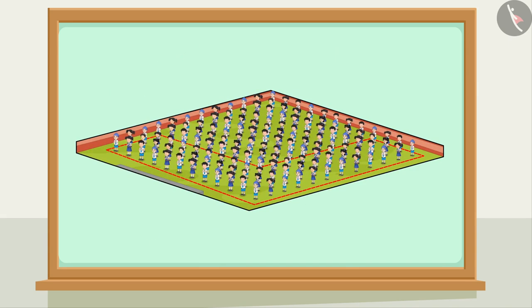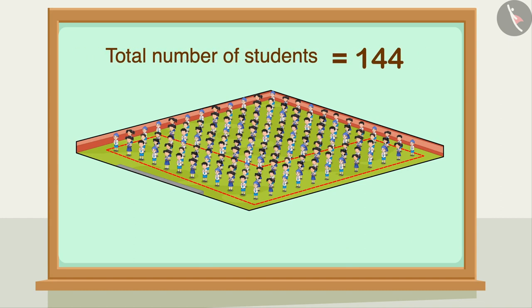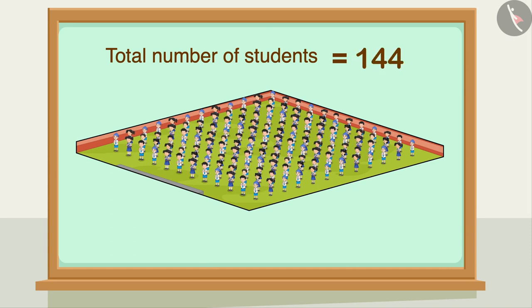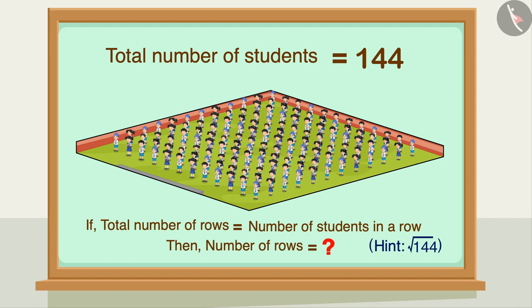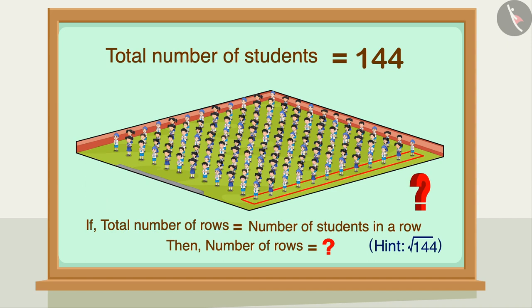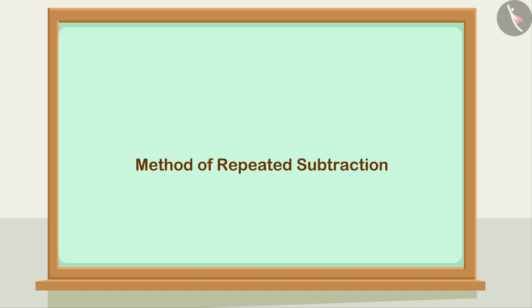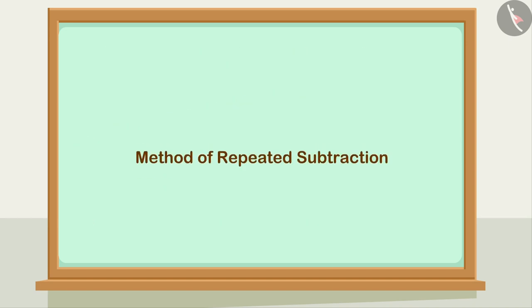Now if some more students come for the parade on the second day, the total number of students becomes 144, which is a perfect square number. How many rows of students will be formed so that the total number of rows and the number of students in each row are equal? Find the answer using the repeated subtraction method.